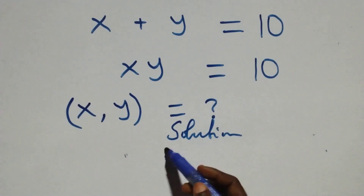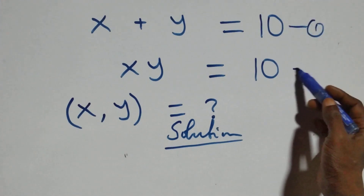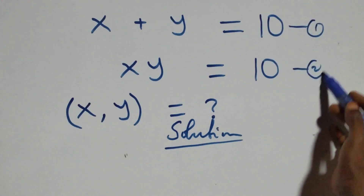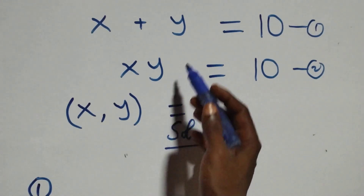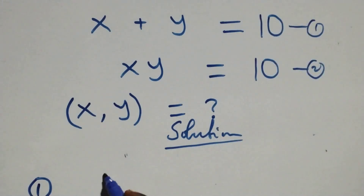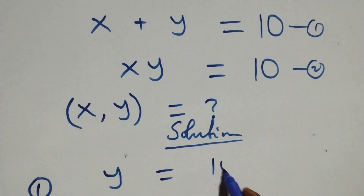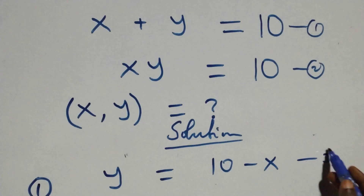Let's label this as equation 1 and this as equation 2. Then from equation 1, we make y the subject and we take x to the other side. That is, y equals to 10 minus x. We can label this as equation 3.